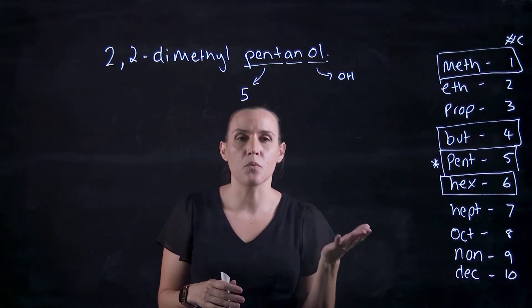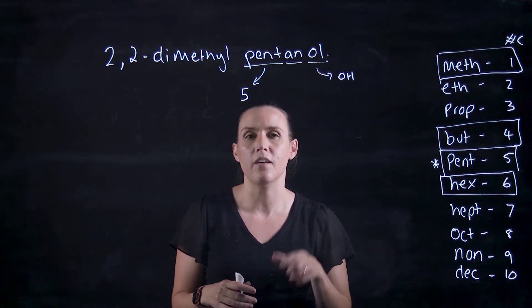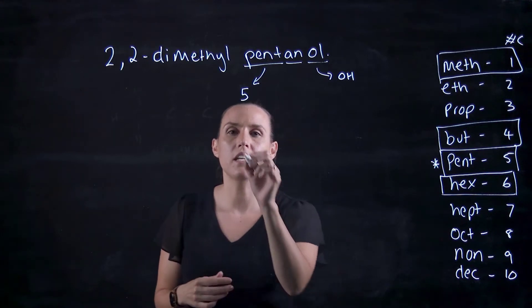Now, if I had to say it was on carbon three, I could have three pent and ol, or I could have pent and three ol as options. So putting this together, we've got five carbons.